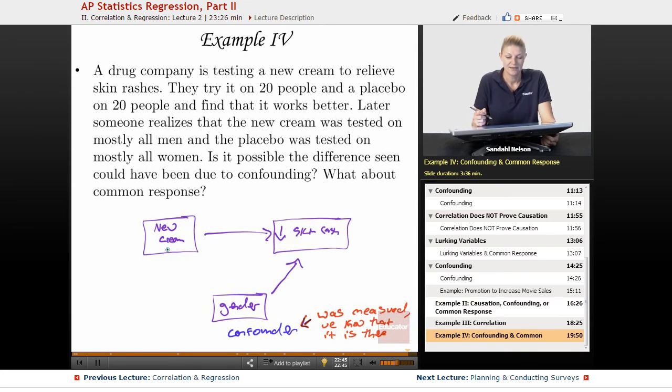So hopefully that makes sense. Confounding can be a little confusing. And as you move on to more advanced statistics courses in college, they really don't talk about this difference between common response and confounding. It's more that there is confounding, and it's really an AP statistics thing to talk about the common response. But for the most part, common response is going to be something that's like a really obviously common response. Like, okay, the sun went up, so more people ate ice cream, more people drowned.